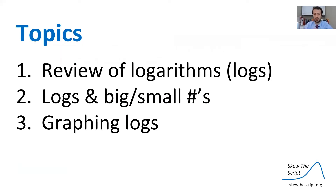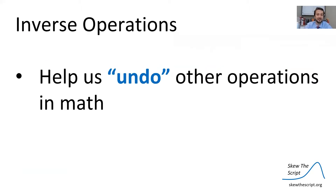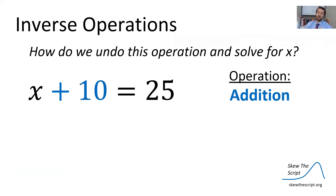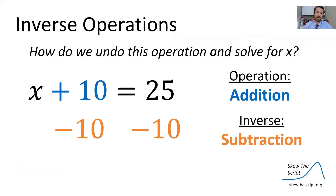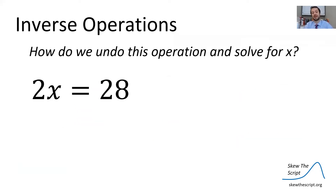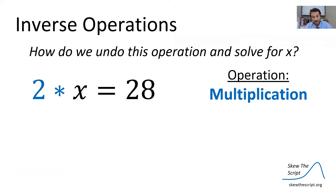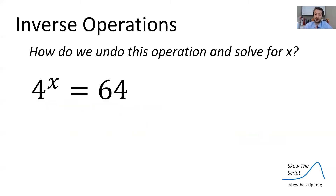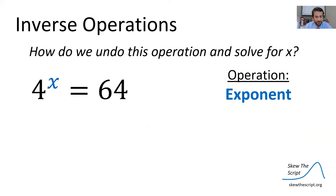To start, we're going to be reviewing logarithms — logs for short. We can think of inverse operations, which help us undo other operations in math. For example, x plus 10 equals 25: we have the addition operation, so the inverse is subtraction. We subtract 10 from both sides, it cancels out on the left side, and we get x equals 15. For 2x equals 28, we have multiplication, so the inverse is division. We divide by 2 to get x equals 14. How about 4 to the power of x equals 64? The operation here is an exponent, and the inverse is not immediately clear.